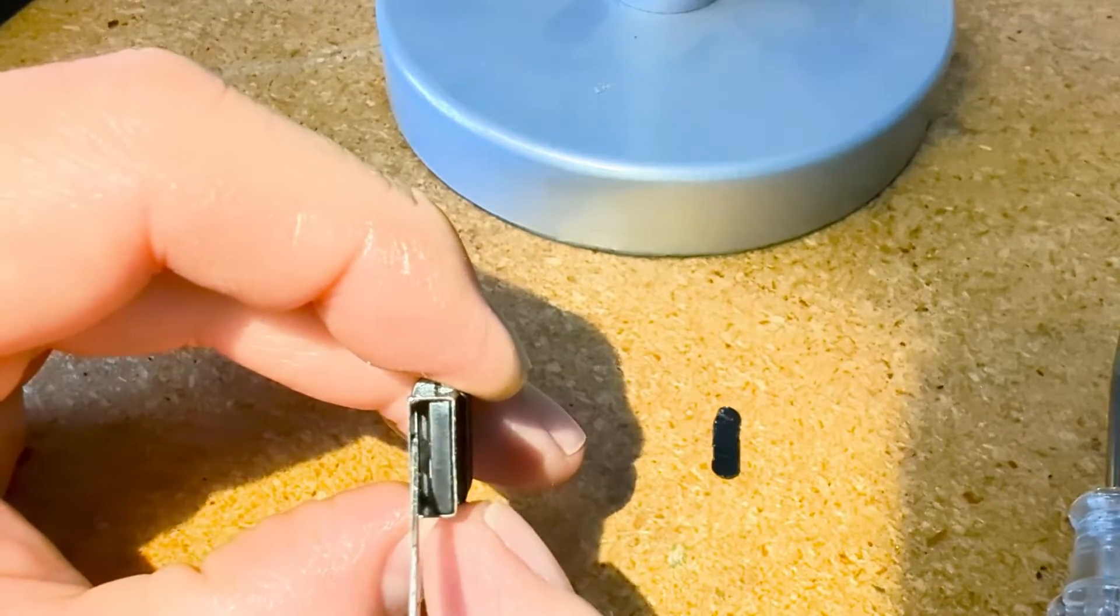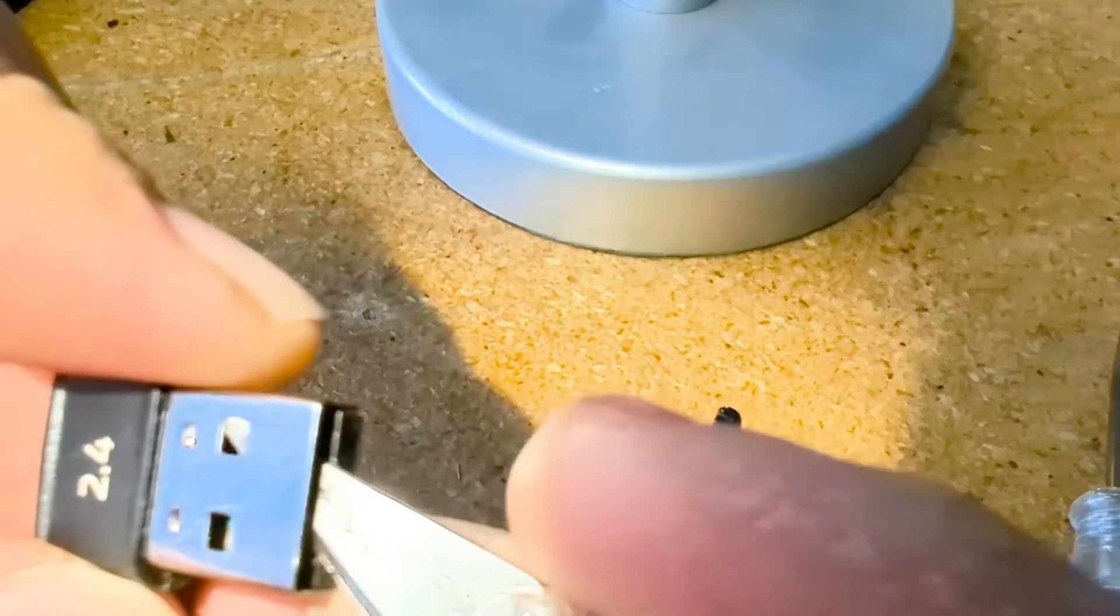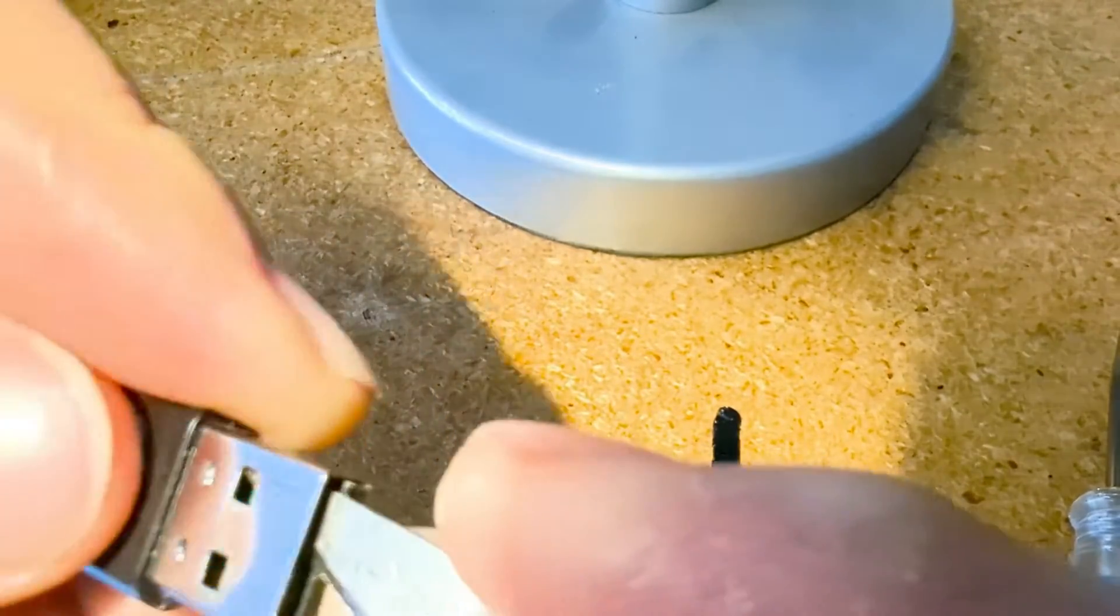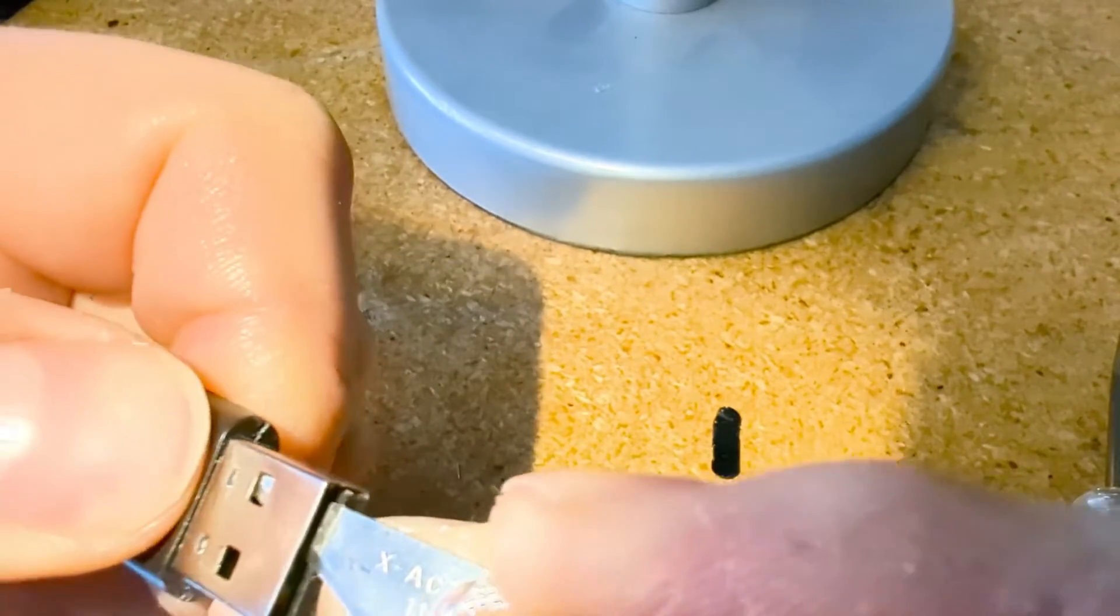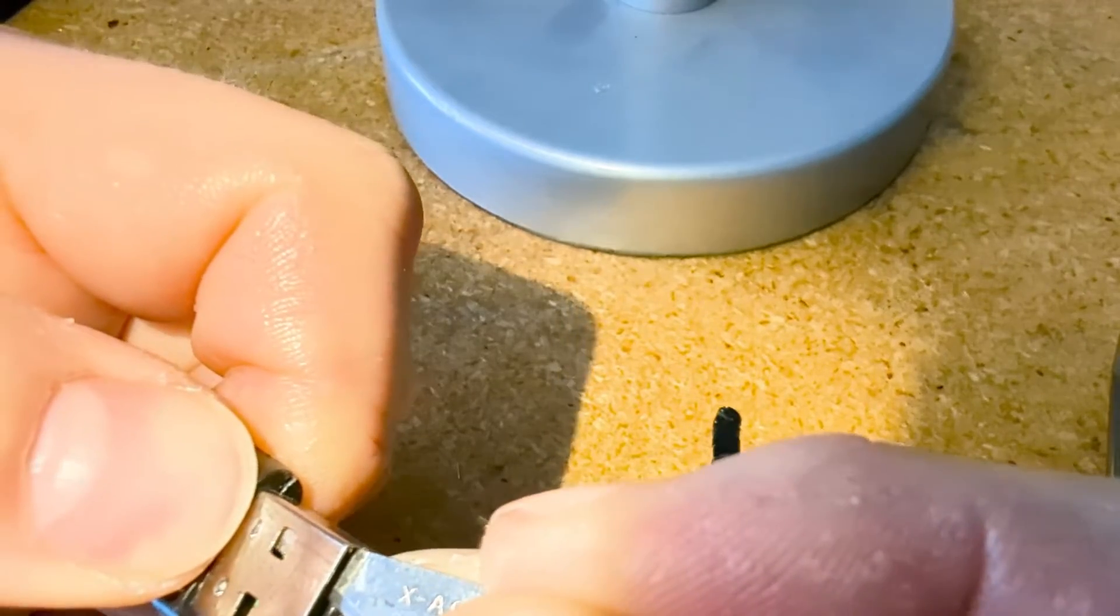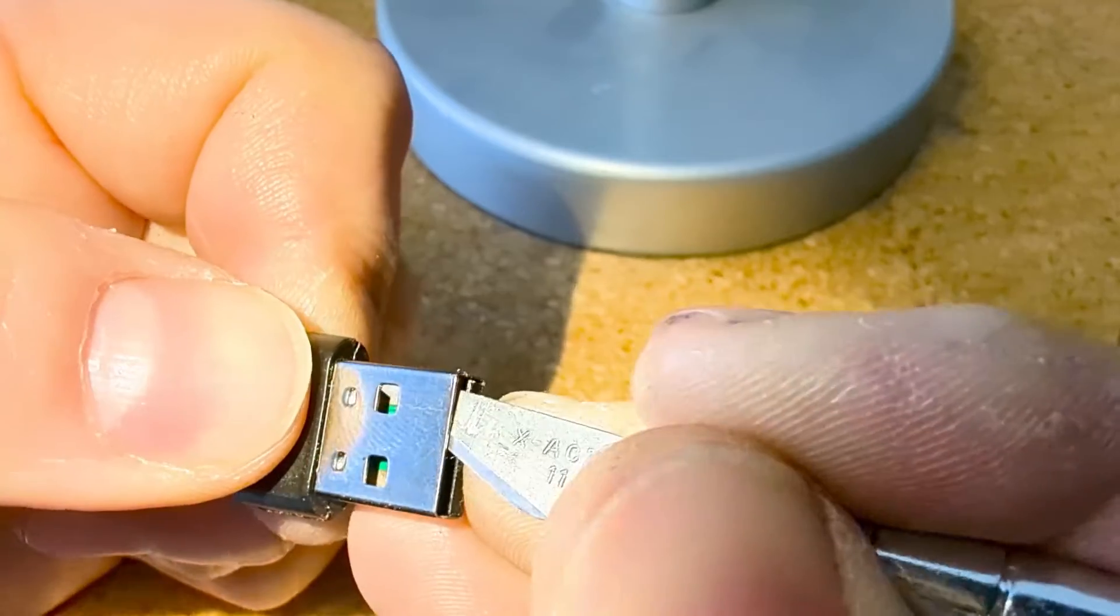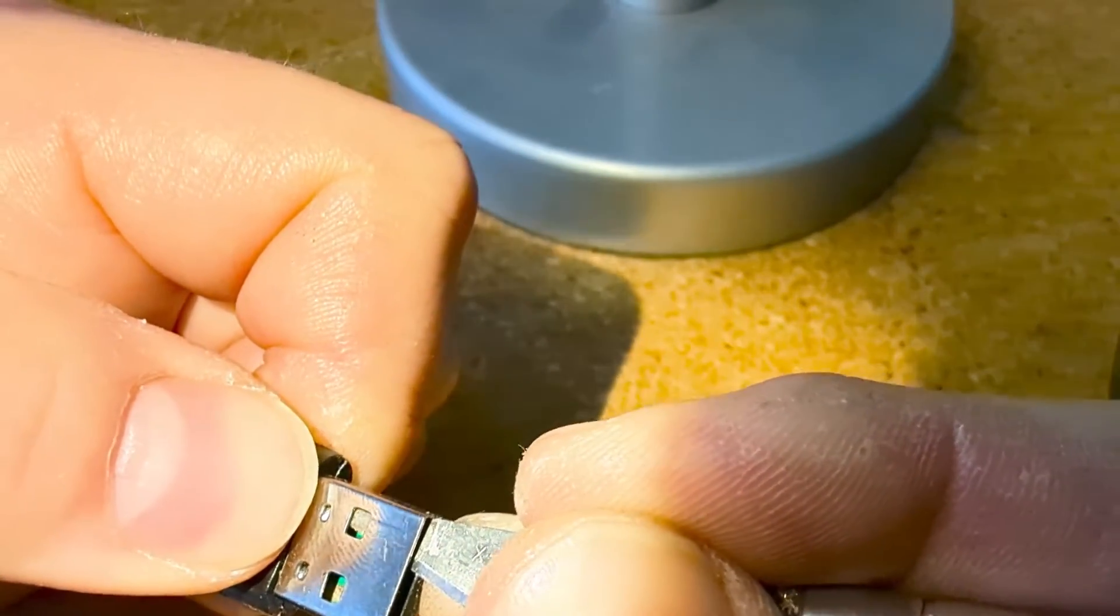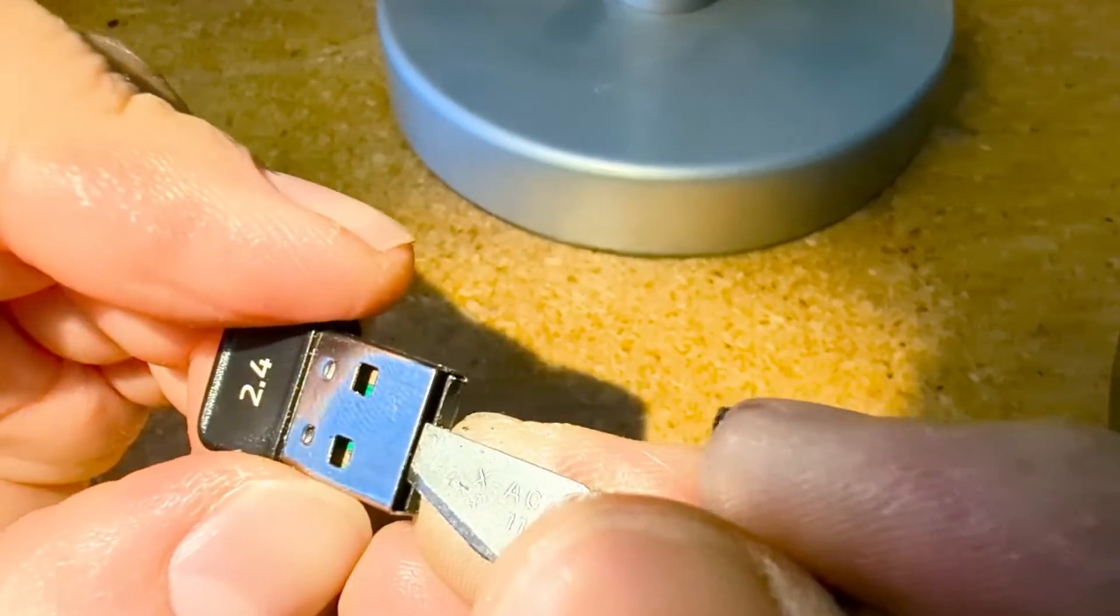Insert the blade on away from the plastic block side of the connector to get underneath those little retaining clips that are crimped in. Getting the blade underneath.